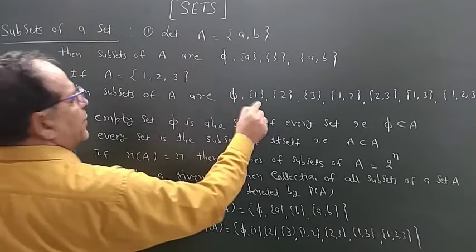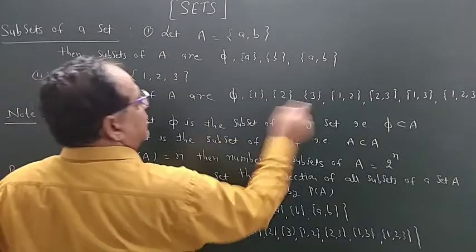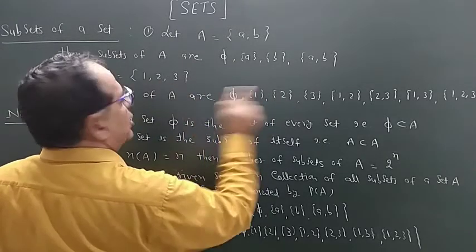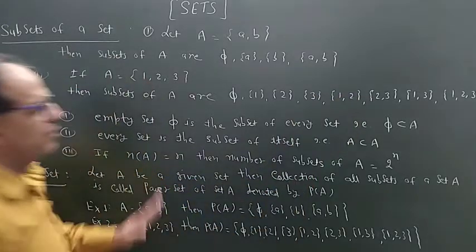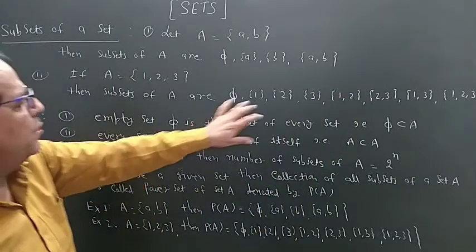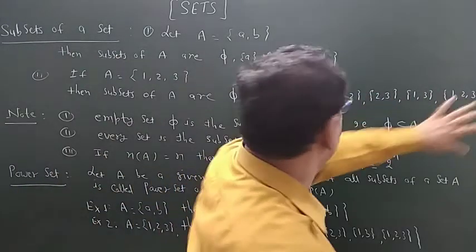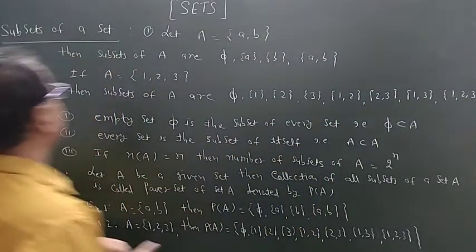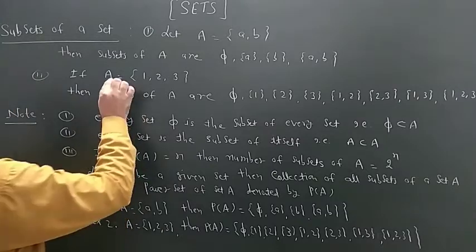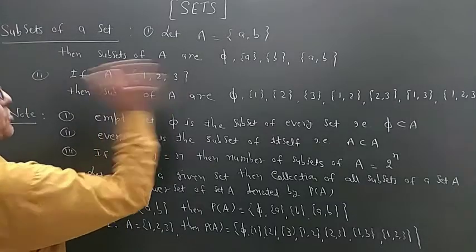...{1,2}, {2,3}, {1,3}, and {1,2,3} — so there are 8 subsets of set A when the number of elements is 3. In the first case with 2 elements there were 4 subsets (2²), and with 3 elements there are 8 subsets (2³). So if the number of elements in any set A is n, then the number of subsets of A equals 2^n.